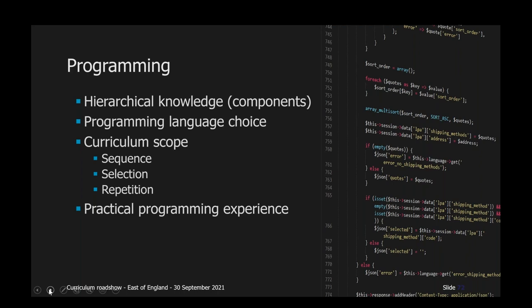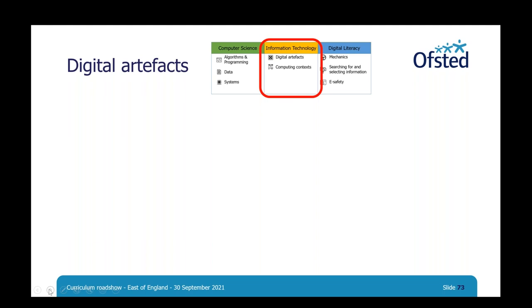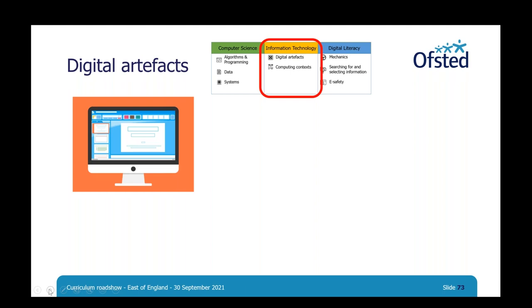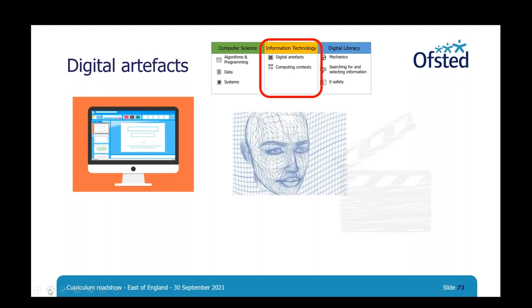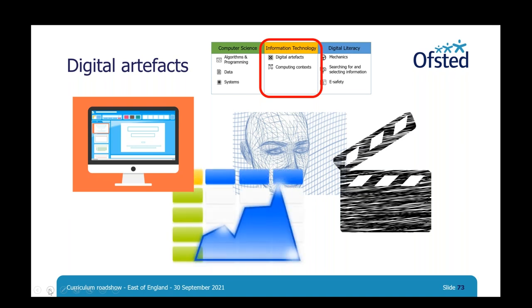So we've considered two aspects within our first category of computer science — thinking about how computers work. Let's now move on to the second category, information technology, knowledge of how computers can be used. As a reminder, this is our second category in the table from the start of the presentation, information technology in the red box. So what about knowledge of digital artefacts? A digital artefact is a digital object that can be created using a computer — and I use computer in the broadest sense to include other devices such as tablets or smartphones. Examples of digital artefacts within information technology might include presentations such as the one we're reviewing now, 3D models, videos or animation, or even spreadsheets.